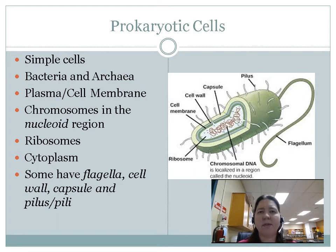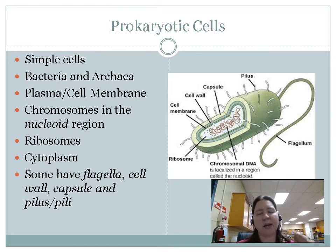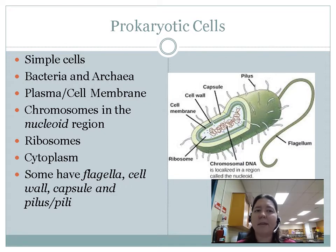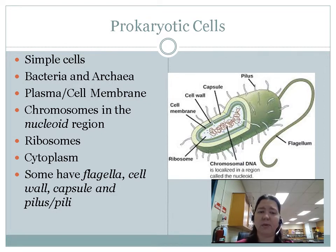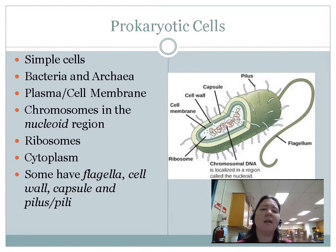There are four things that are in every single cell, whether you're talking about a prokaryotic cell, a eukaryotic cell, plant or animal. Number one, a cell membrane. Number two, they have DNA or RNA — they have some sort of nucleic acid. In the case of prokaryotic cells, they're in the nucleoid region. Number three, they have ribosomes. And number four, they all have cytoplasm.